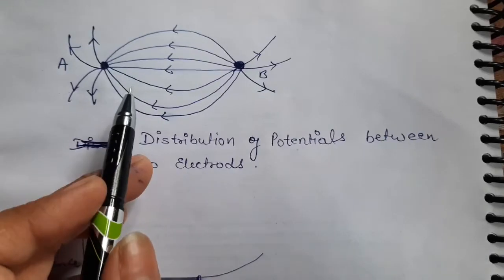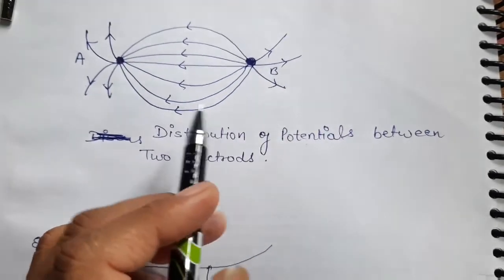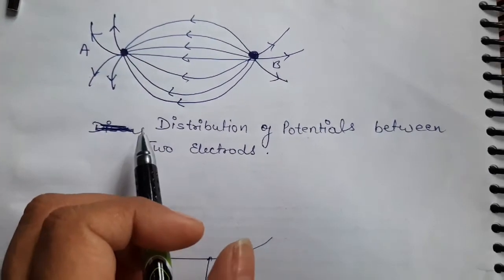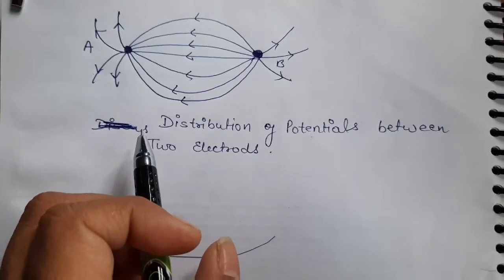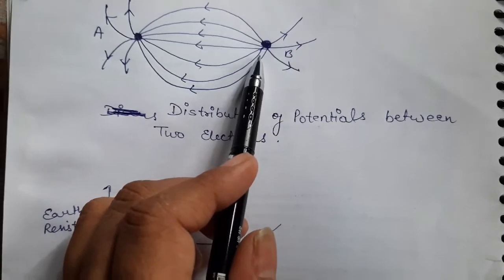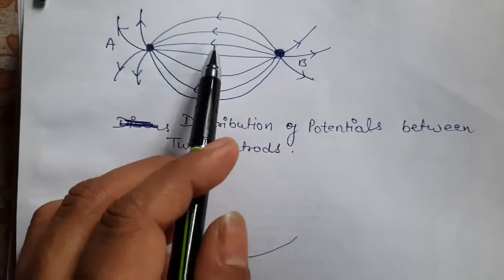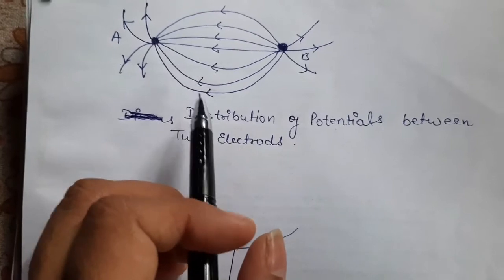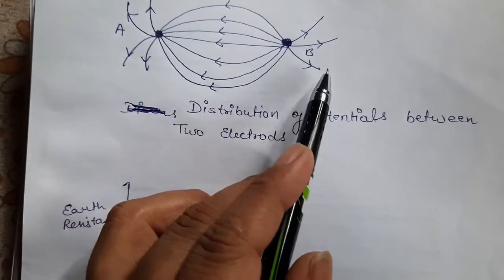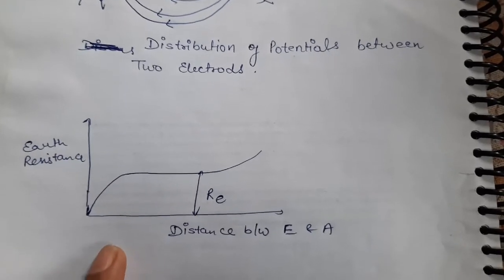This figure represents the distribution of potential between two electrodes. Near the auxiliary electrode, the current density is maximum. In fact, the current density in the middle is minimum compared to near the auxiliary electrode.